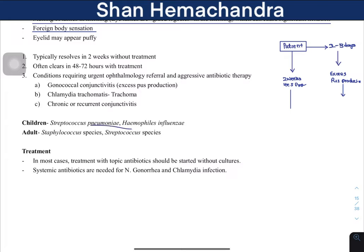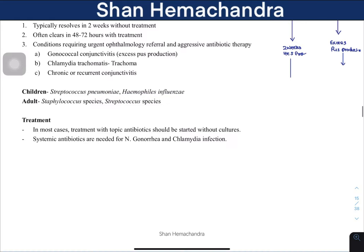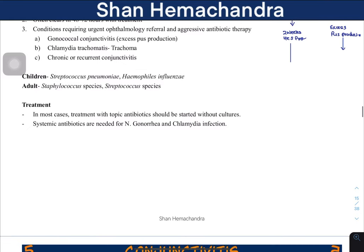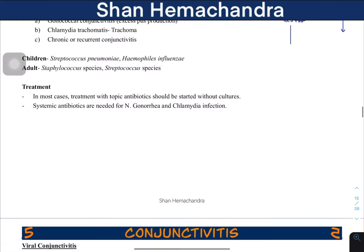In adults, the main causative agents are Staphylococcus and Streptococcus species. Treatment involves topical antibiotics when patients present with purulent discharge. If it is a serious condition, systemic antibiotics are required instead.